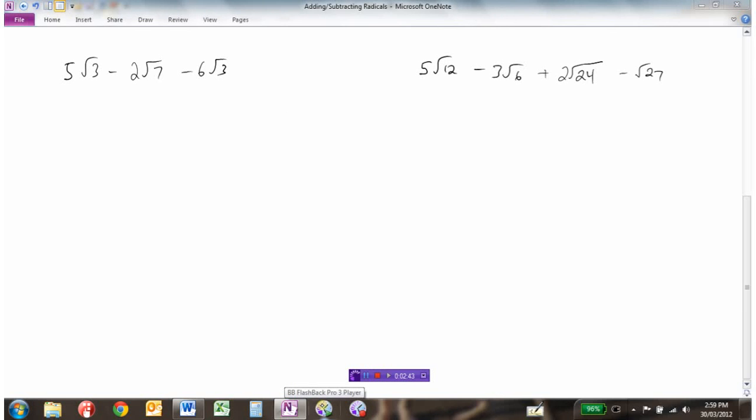So let's look at a couple more examples here. Looking at the first one: 5√3 - 2√7 - 6√3. So the first one and the last one are like terms. So 5√3 take away 6√3 would be -1√3.